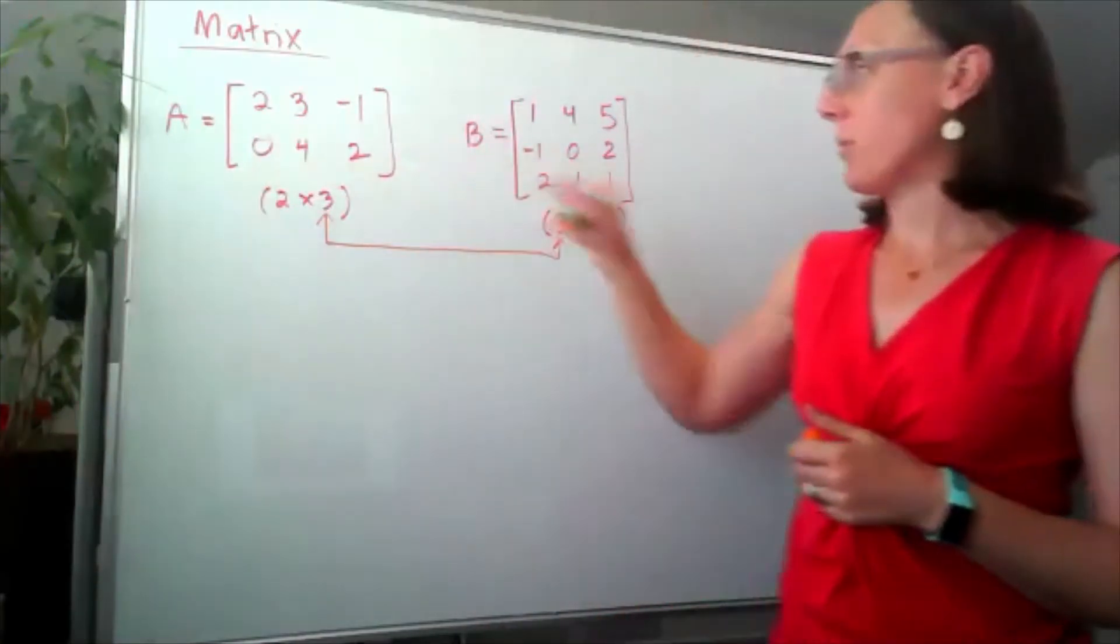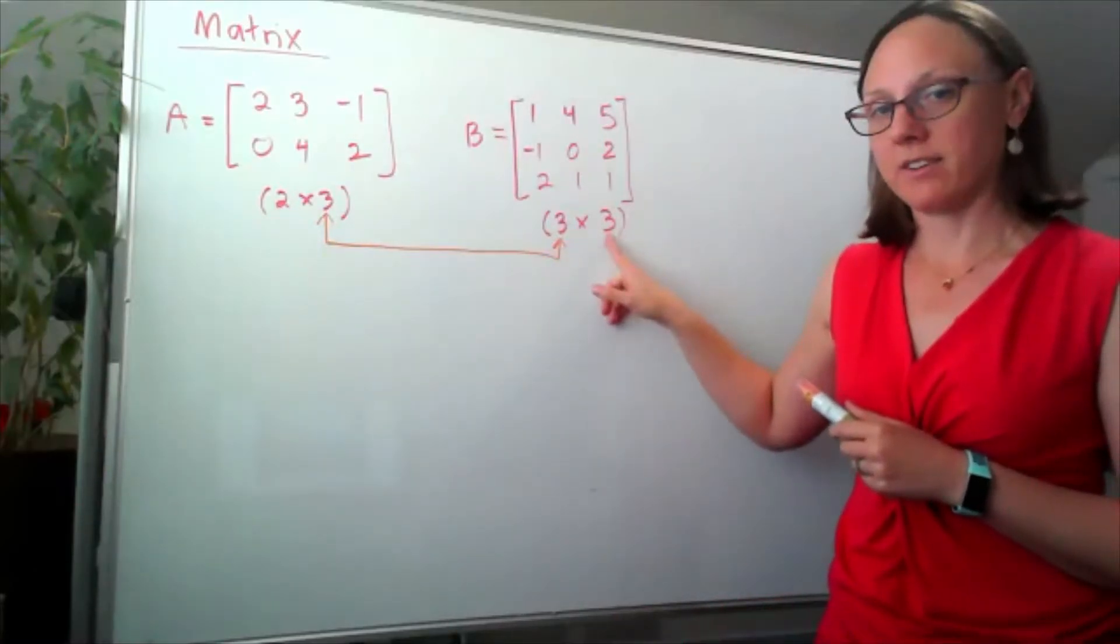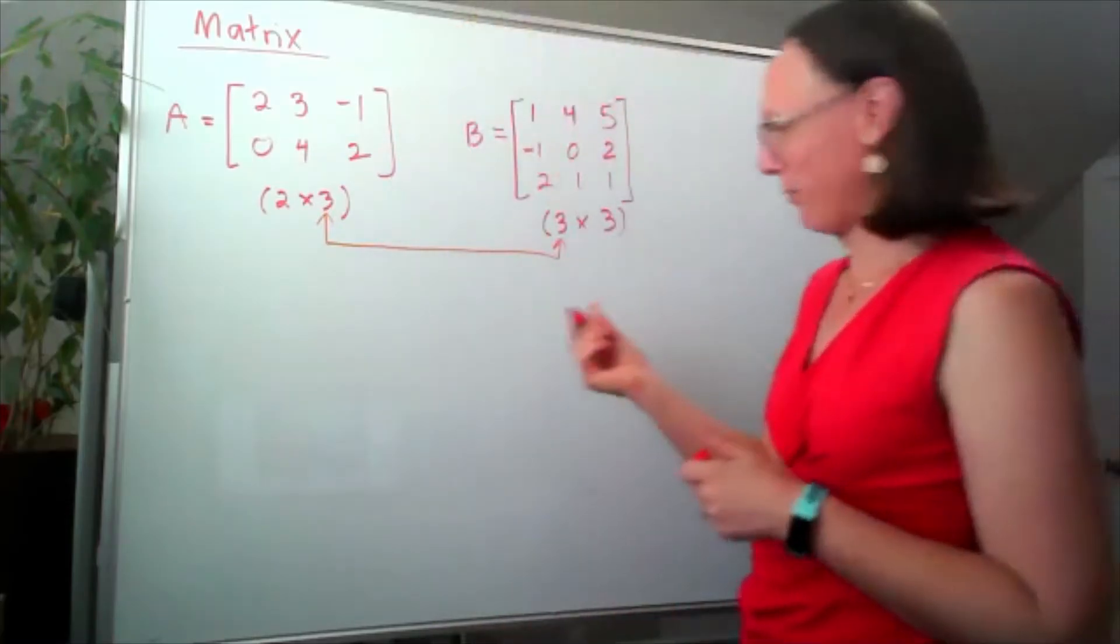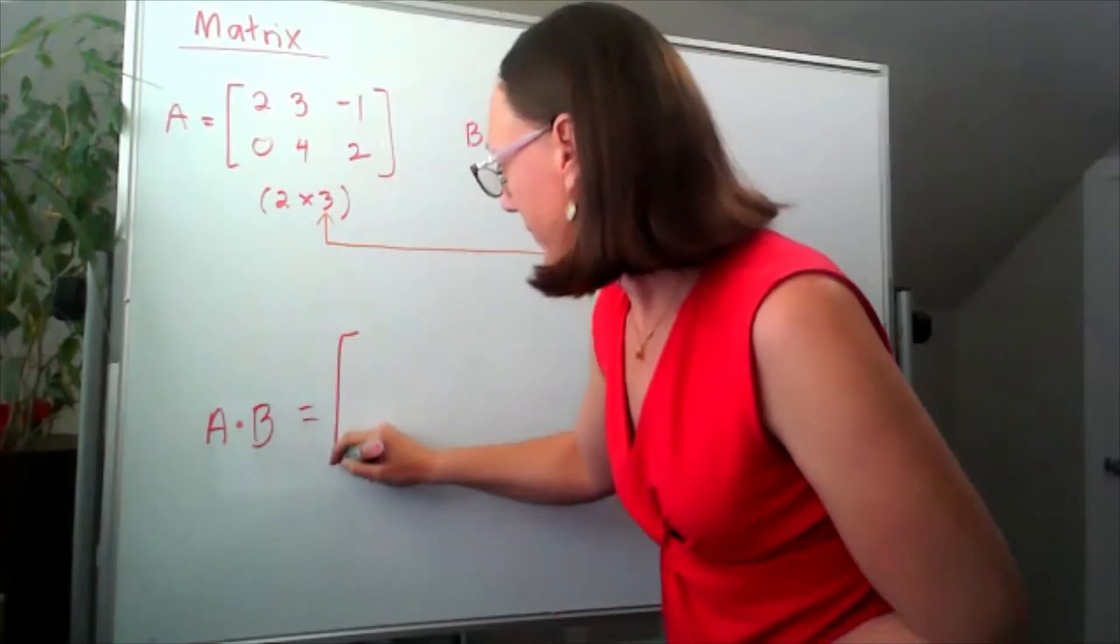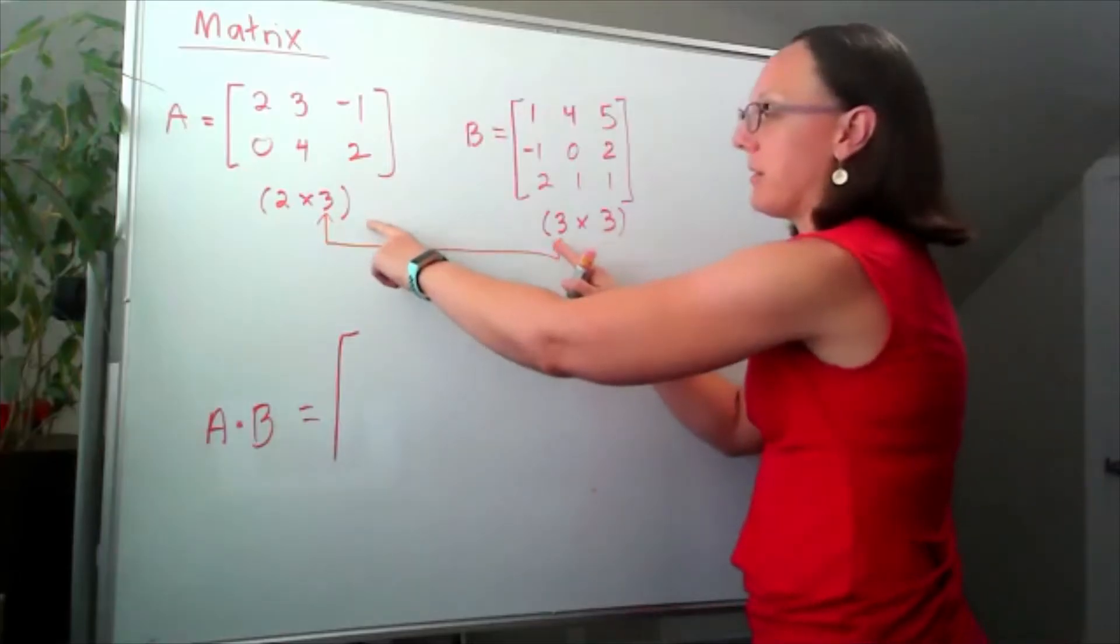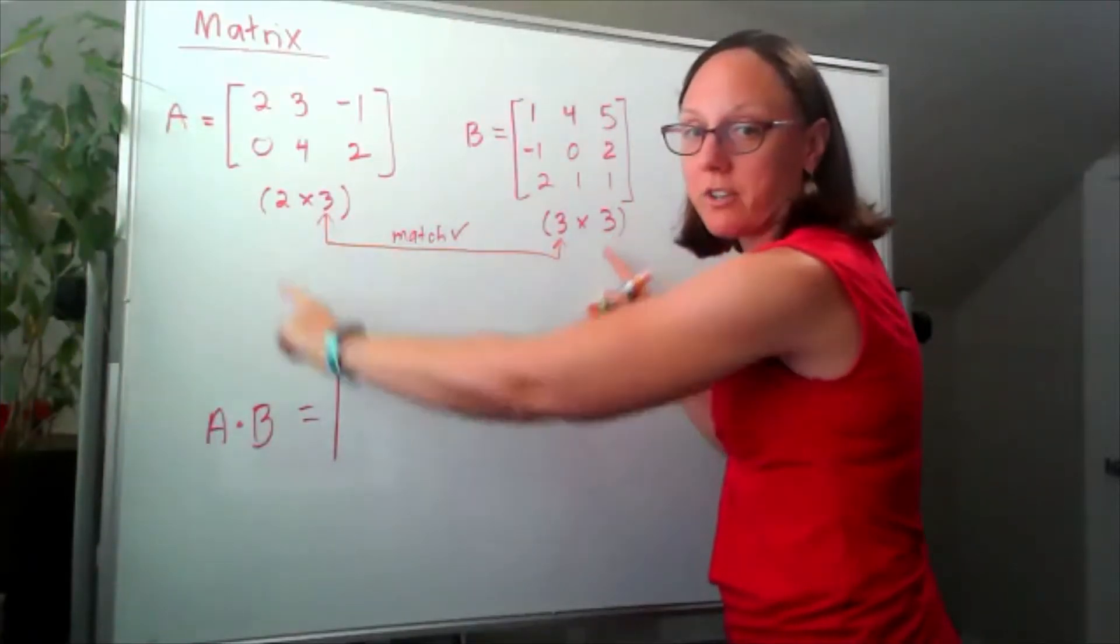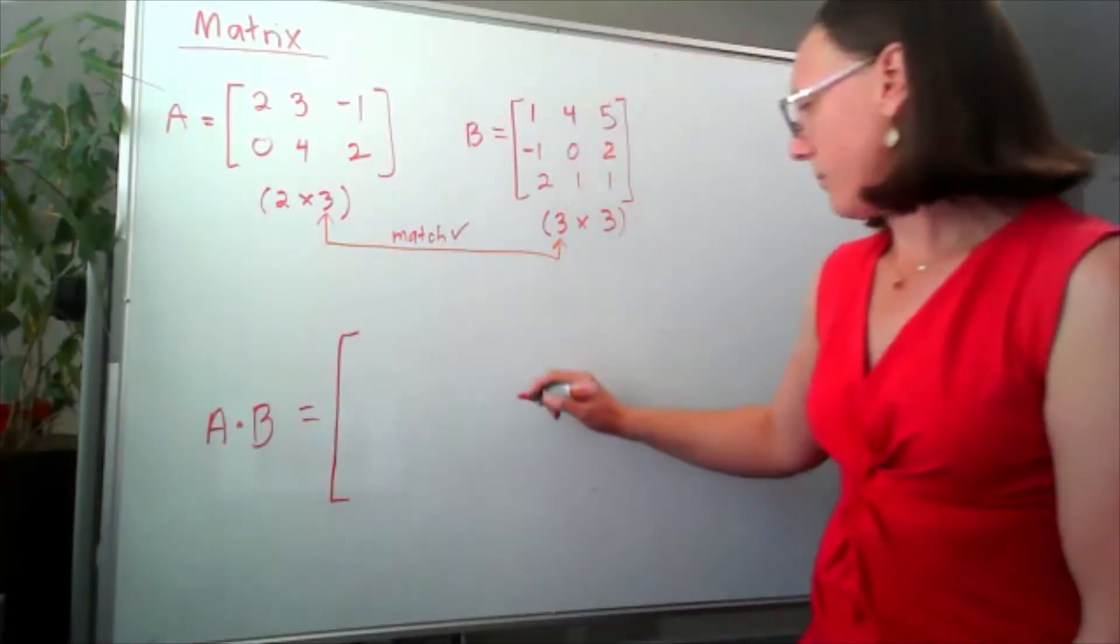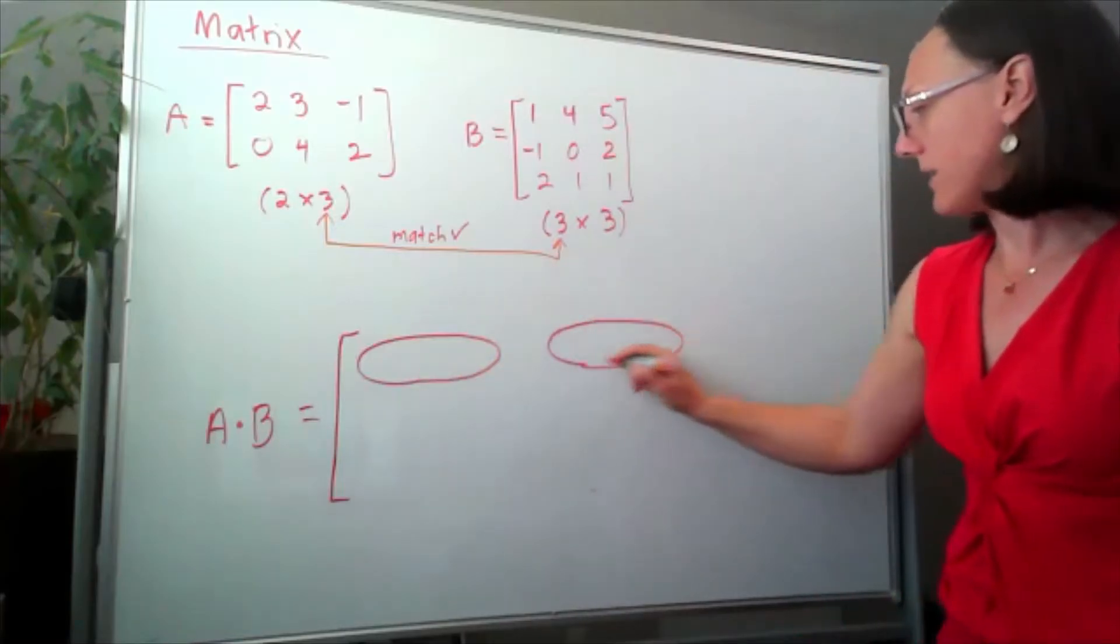So if I multiply A times B, my result will be a 2 by 3 matrix. So now let's get to the actual multiplying part. A times B, and we said this is going to be a 2 by 3 matrix. My inner dimensions match, which means it's possible to multiply them. Those outer dimensions tell me how big the result will be. So I'm going to give myself lots of space. This is going to be a 2 by 3 matrix.